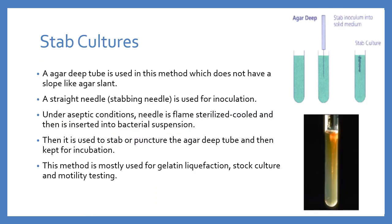Next is stab culture. An agar deep tube — which does not have a slope like agar slant — is used. A straight stabbing needle is flame-sterilized under aseptic conditions, dipped into the bacterial suspension, then stabbed or punctured straight into the agar deep tube and kept for incubation. This method is mostly used for tests like gelatin liquefaction, stock cultures for storage, and motility testing — for example for checking motility using protease.